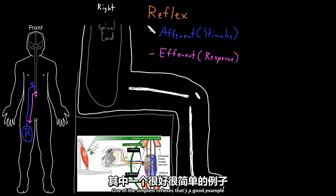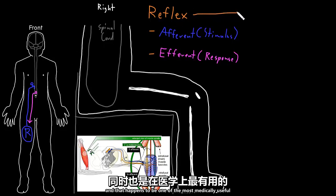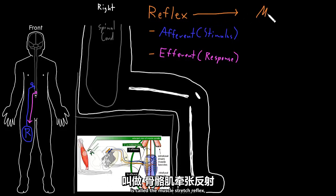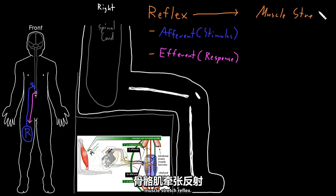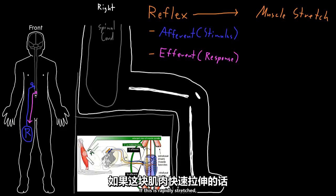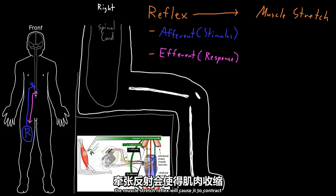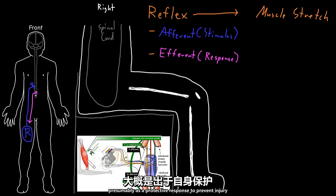One of the simplest reflexes, and one that happens to be the most medically useful, is called the muscle stretch reflex. If a skeletal muscle, like here in the arm, is rapidly stretched, the muscle stretch reflex will cause it to contract very quickly after being stretched, presumably as a protective response to prevent injury from being stretched too rapidly.